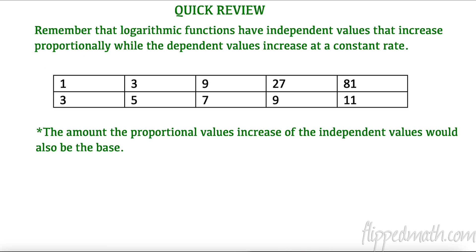To do this, let's start a little bit simpler. Logarithmic functions have independent values that increase proportionally and dependent values that increase at a constant rate. Here's a constant rate increasing by two every time, this is increasing at a proportion of three, multiplying by a factor of three. The great thing is this proportional right here would be our base if we were to find the equation of this line. If they were switched, this would be three to some variable, that would be x minus three over two to get that equation.